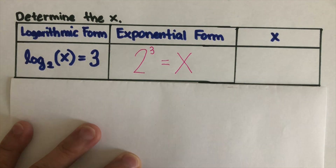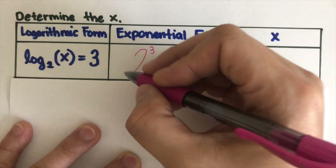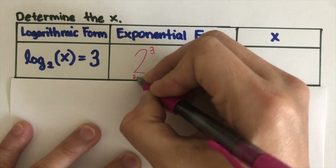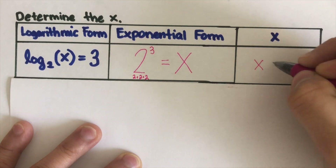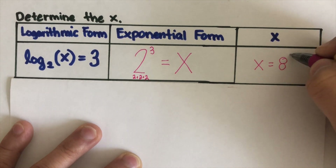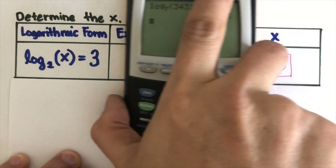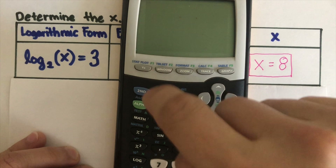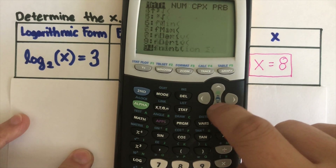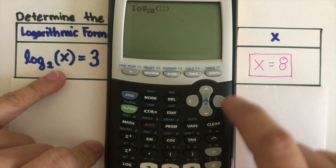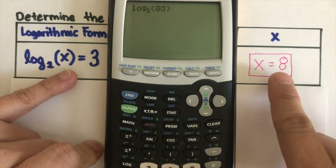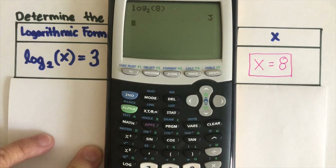That means if you multiply 2 times 2 times 2, which is 2 to the third, 2 times 2 is 4, times 2 is 8. So our x here is 8. This should make sense, because if we set up the log version for this, with x now being 8, and we have 2 as the base and 8 here, let's see if that equals 3 — and it is equal to 3.